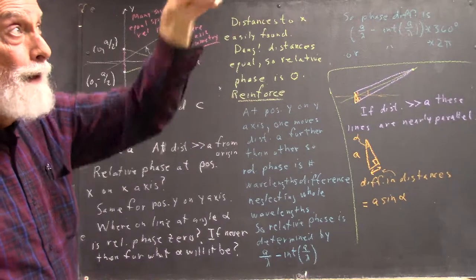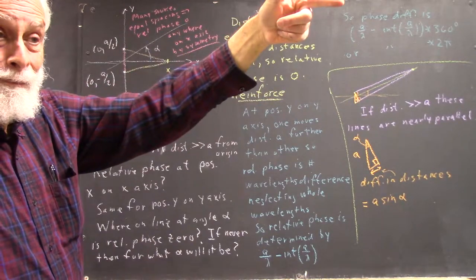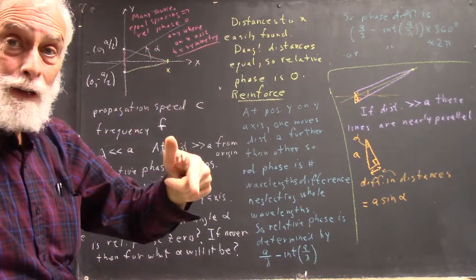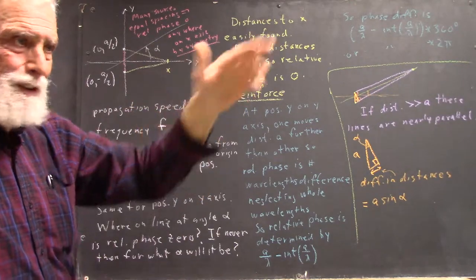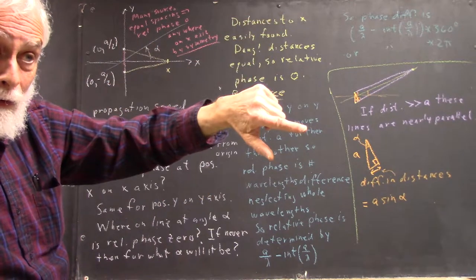For any phase you have between 0 and 180, you're going to find a phase almost exactly opposite it between 180 and 360.